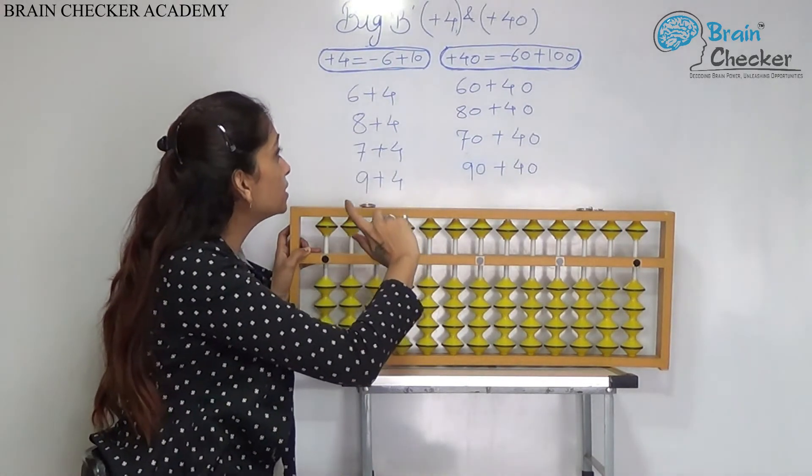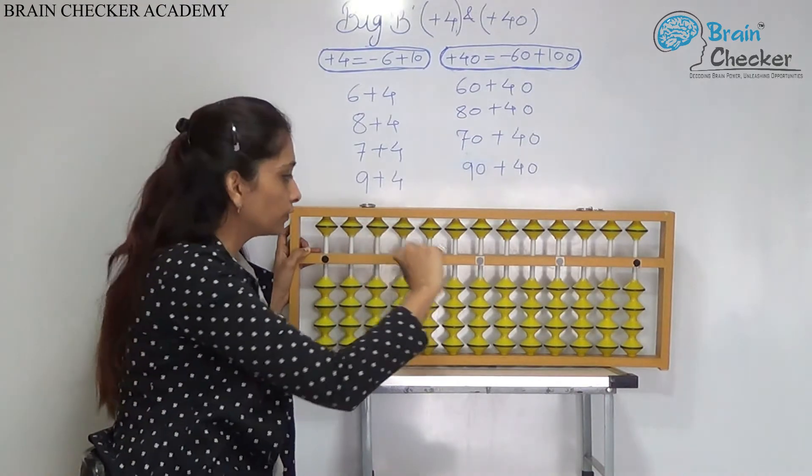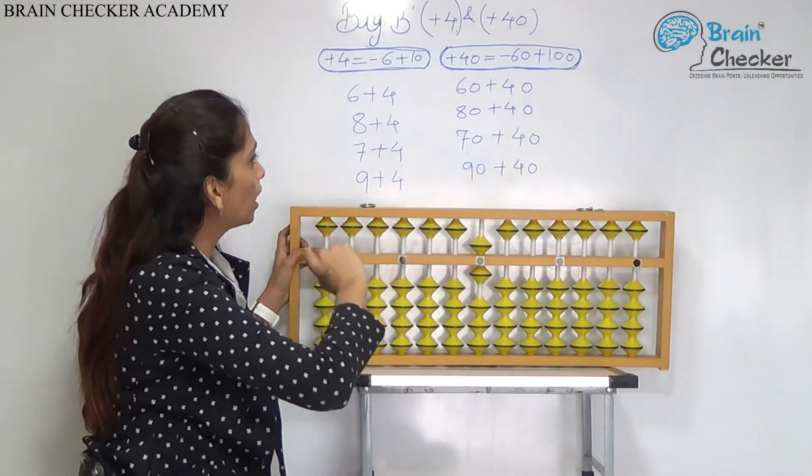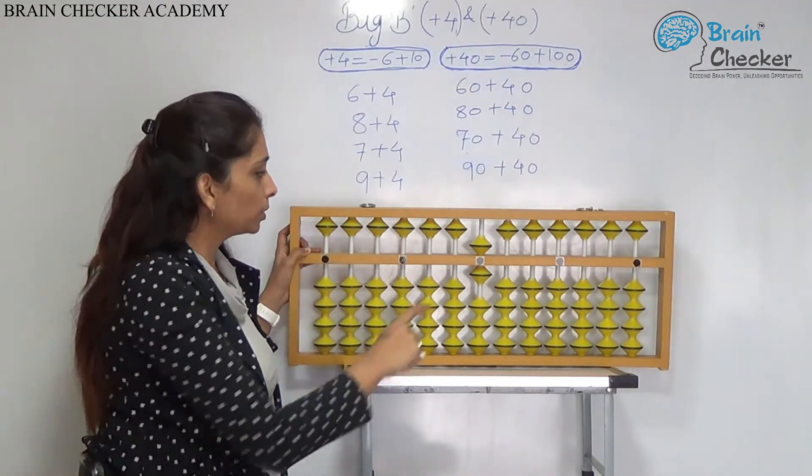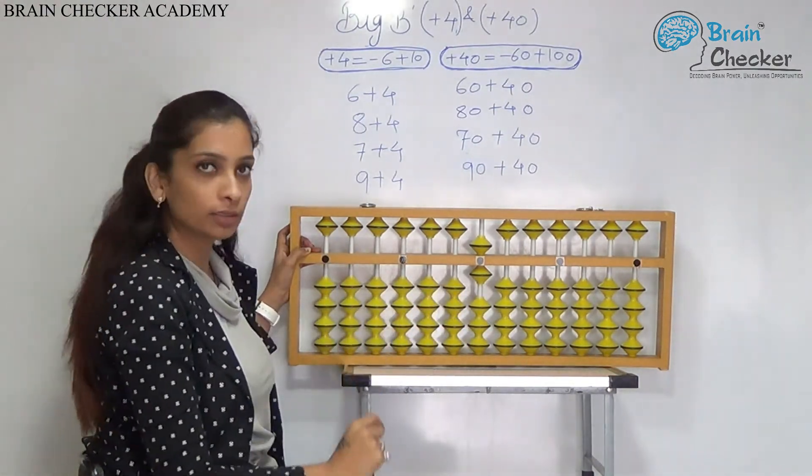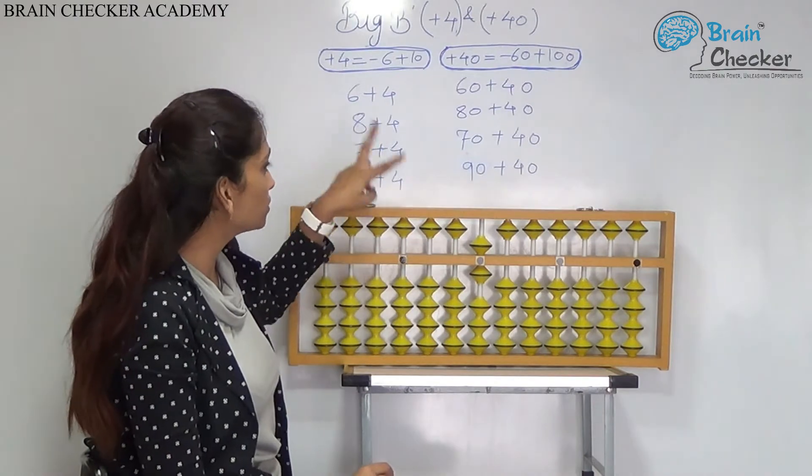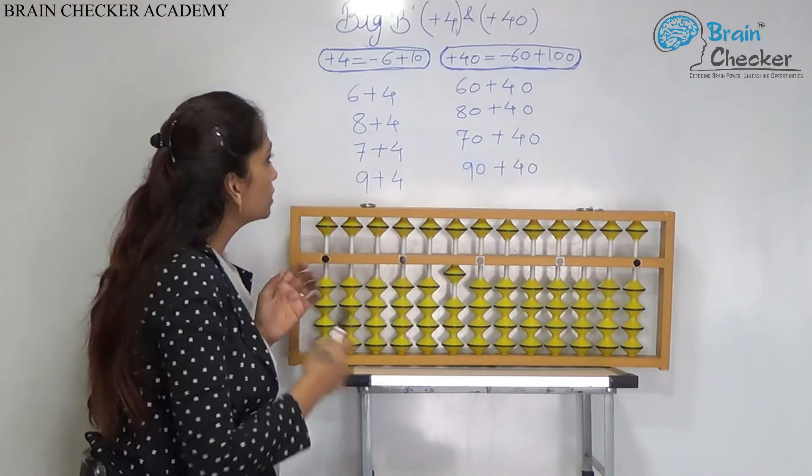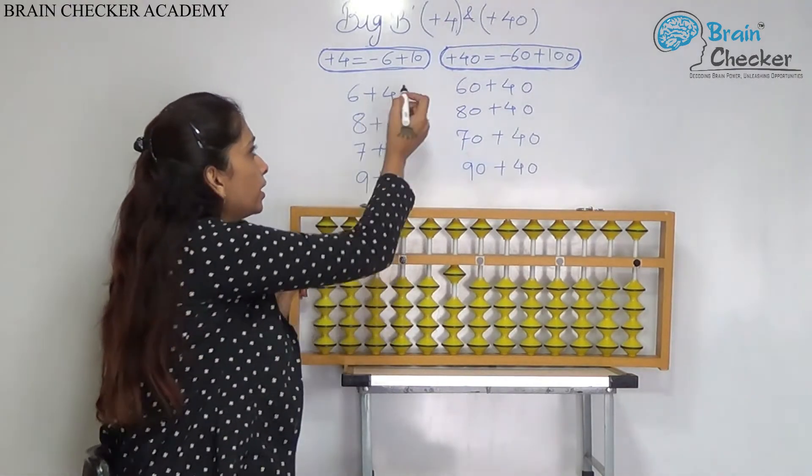The first example is 6 plus 4. We will take the 6 on the unit rod and we need to add 4 now. But because we don't have 4 beads here, we will use the formula. Add 10 less 6. So, the answer is 10.